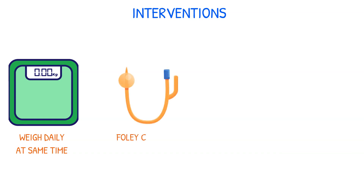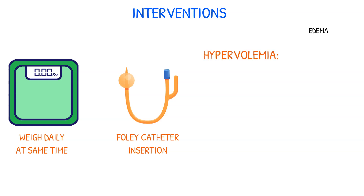Foley catheter insertion may be ordered to more accurately monitor output. Signs of hypervolemia include edema, abdominal bloating, cramping, headache, hypertension, and shortness of breath.